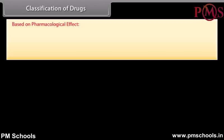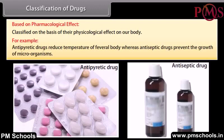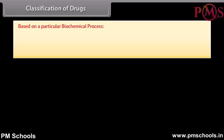Classification of drugs: Drugs can be classified in several ways. Based on pharmacological effect, drugs are classified on the basis of their physiological effect on our body. For example, antipyretic drugs reduce the temperature of a feverish body, whereas antiseptic drugs prevent the growth of microorganisms. Based on a particular biochemical process, some drugs affect biochemical processes.